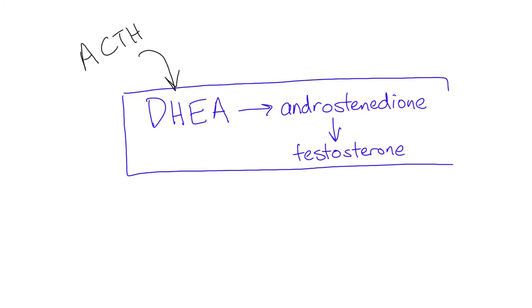Testes produce nearly all of male testosterone. In women, most testosterone is from the adrenal glands. Androgen conversion to estrogen occurs in ovaries and in adipose tissue.